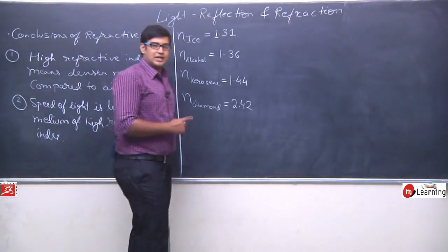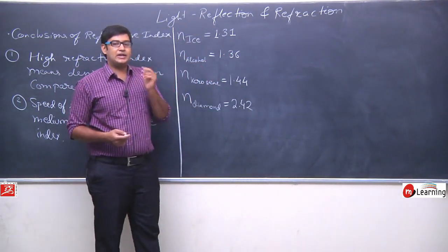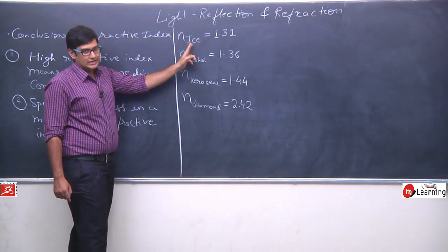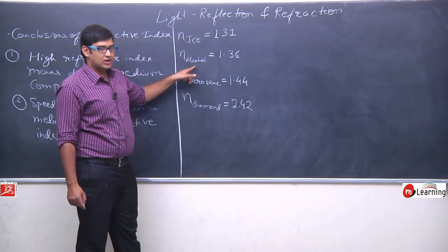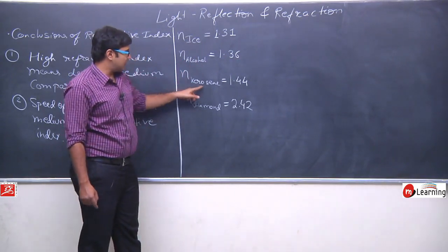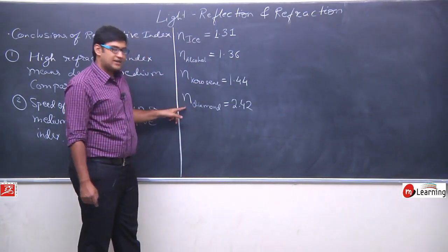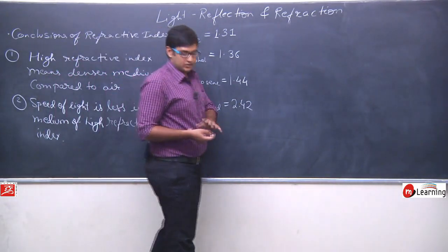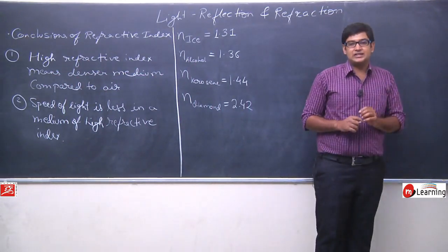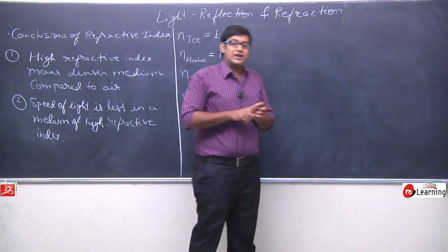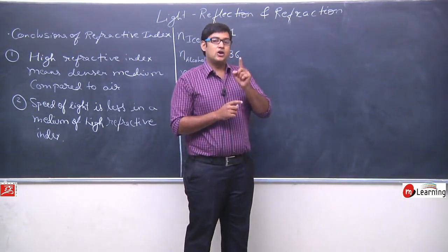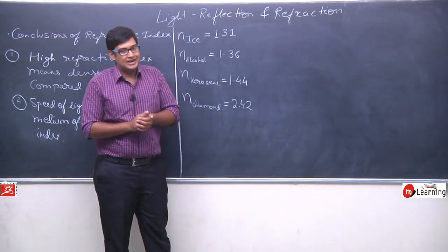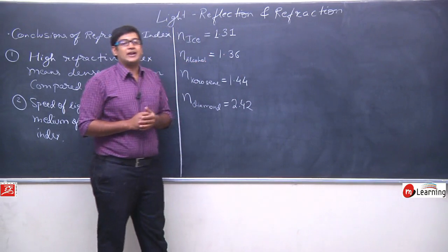Mere saamne yahan pe chaar alag mediums ke refractive index likhe hue hain. N of ice = 1.31, refractive index of alcohol = 1.36, refractive index of kerosene = 1.44, and refractive index of diamond = 2.42. Now let us try to compare these four mediums — kiska refractive index zyada hai, kiska kam hai, kaun optically dense hai, kaun optically rarer hai, aur kis mein light ki speed zyada hai aur kis mein kam hai.